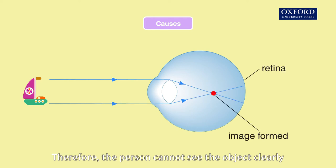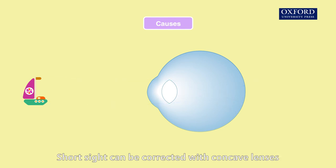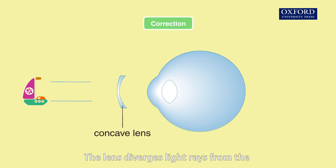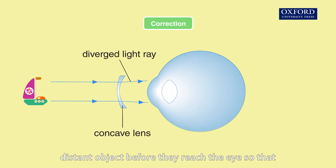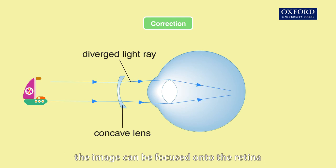Therefore, the person cannot see the object clearly. Short sight can be corrected with concave lenses. The lens diverges light rays from the distant object before they reach the eye, so that the image can be focused onto the retina.